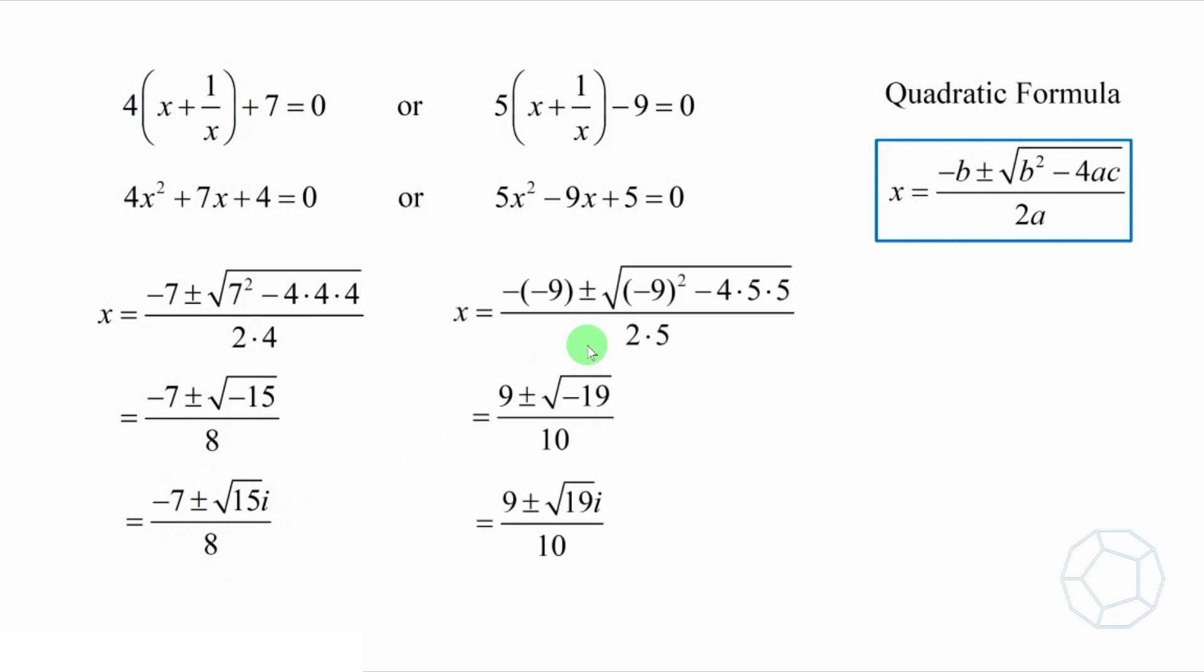We do the same for another quadratic equation, then the answer is x is equal to 9 plus or minus the square root of 19i over 10. Finally, we've got all the four complex roots of the quartic equation.